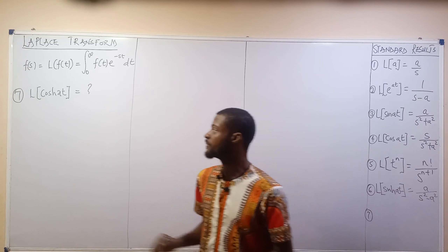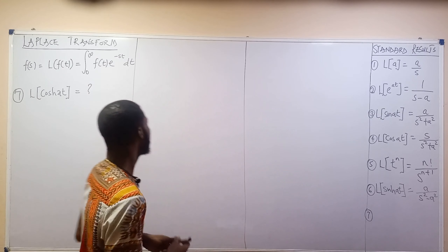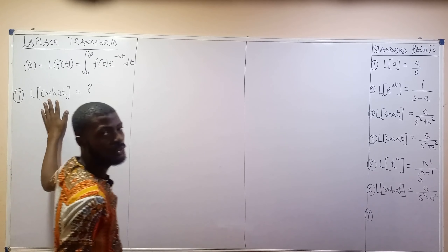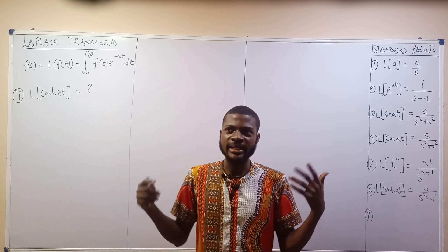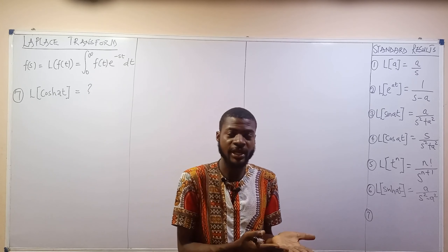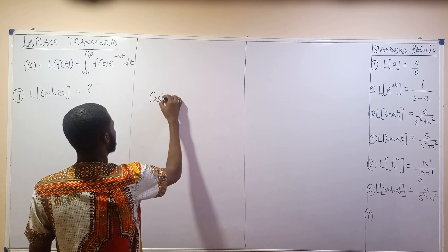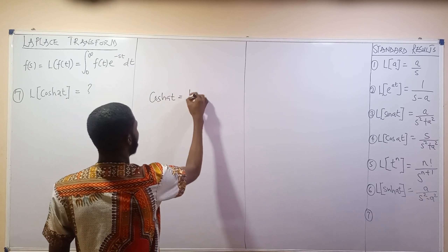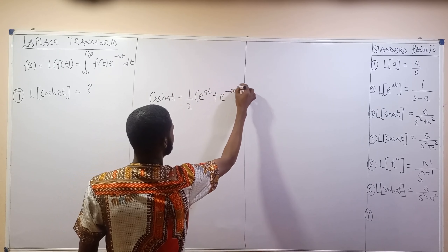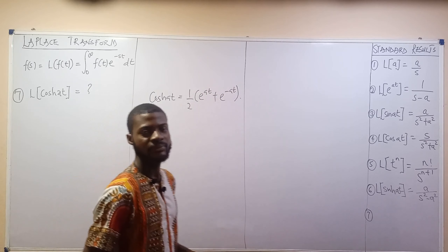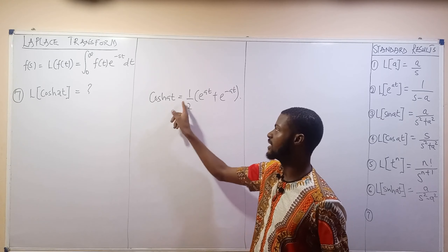To evaluate this, remember I told you we try our best to rewrite functions in terms of their exponential format. Is there an expression with exponentials that can give us cosh? Take note: cosh(at) is equal to 1/2 times the bracket exponential(at) plus exponential(−at).